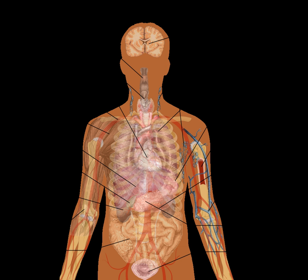Animals such as humans have a variety of organ systems. These specific systems are also widely studied in human anatomy. Cardiovascular system: pumping and channeling blood to and from the body and lungs with heart, blood and blood vessels.